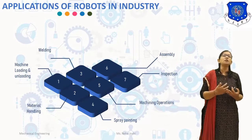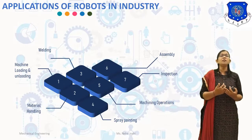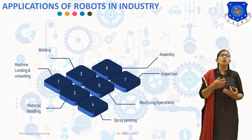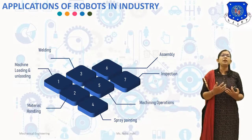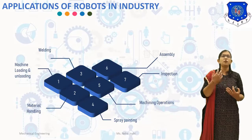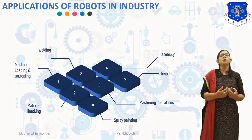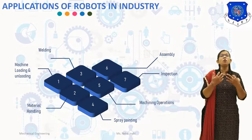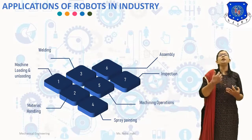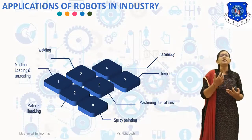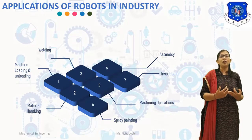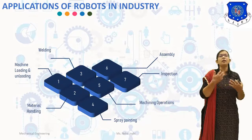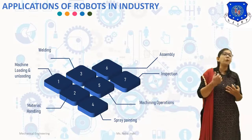The next application is welding. Robots are widely used in spot welding and arc welding. Spot welding is widely used in automobile industries for car body manufacturing. The use of robots for spot welding not only reduces manpower drastically but also improves quality and rate of production. Point-to-point servo control robots, either hydraulically or electrically actuated, equipped with a spot welding gun, are normally used for spot welding.